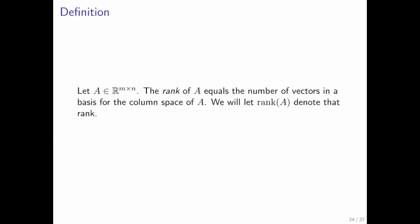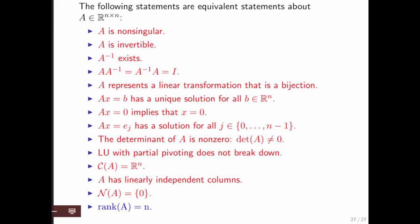If A has n linearly independent columns, then its rank equals n, and A is said to be full rank. This is important: Matrix A is invertible only if its rank equals n, that is, only if it has n linearly independent columns.